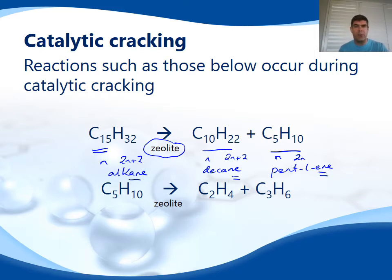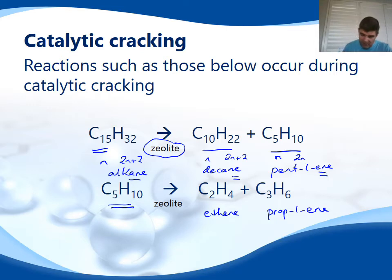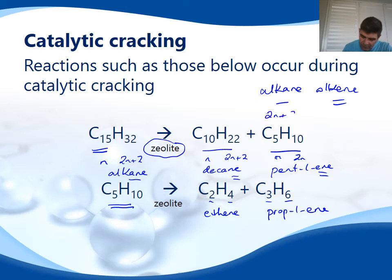This is going to be very important for some of the questions that we look at later on. The larger molecules can be further cracked — in this case, our pent-1-ene is being broken down into ethene and prop-1-ene. Again, the ratios here are 1 to 2, so we know these are alkenes. It's important to keep in mind the difference between an alkane and an alkene, both in terms of single and double bonds, and also the ratio of carbons to hydrogens in these molecules.